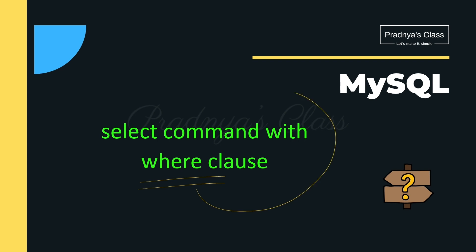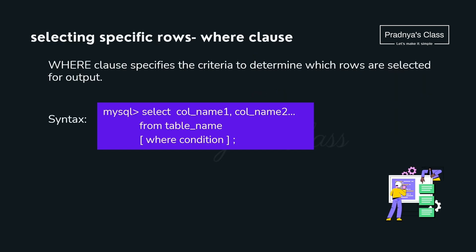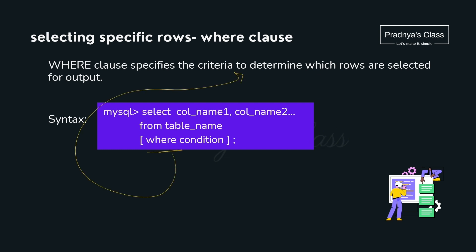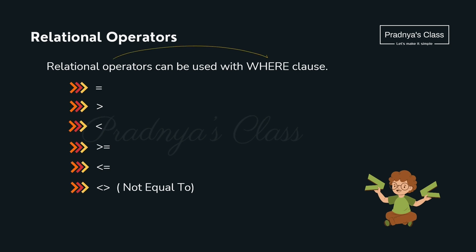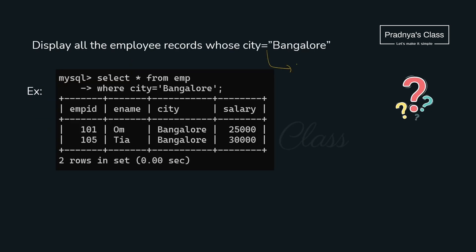Now we will experiment with the WHERE clause used with the SELECT command. With the WHERE clause, we can determine the criteria to display the records. These relational operators are the same as in all programming languages. Note that '=' is equals to and '!=' is not equal to. For example: SELECT * FROM employee WHERE city = 'Bangalore' — records whose city is Bangalore are displayed. You can use other relational operators in the same way.